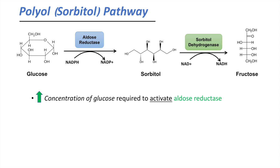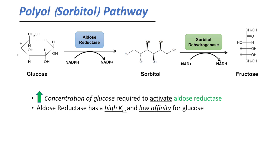A couple of very important points about this pathway: it is only activated when you have high levels or high concentrations of glucose. High concentrations of glucose are required to activate the aldose reductase enzyme, because aldose reductase has a high Michaelis-Menten constant and thus has a low affinity for glucose. That is why a cell typically needs high levels of glucose for this reaction to occur.